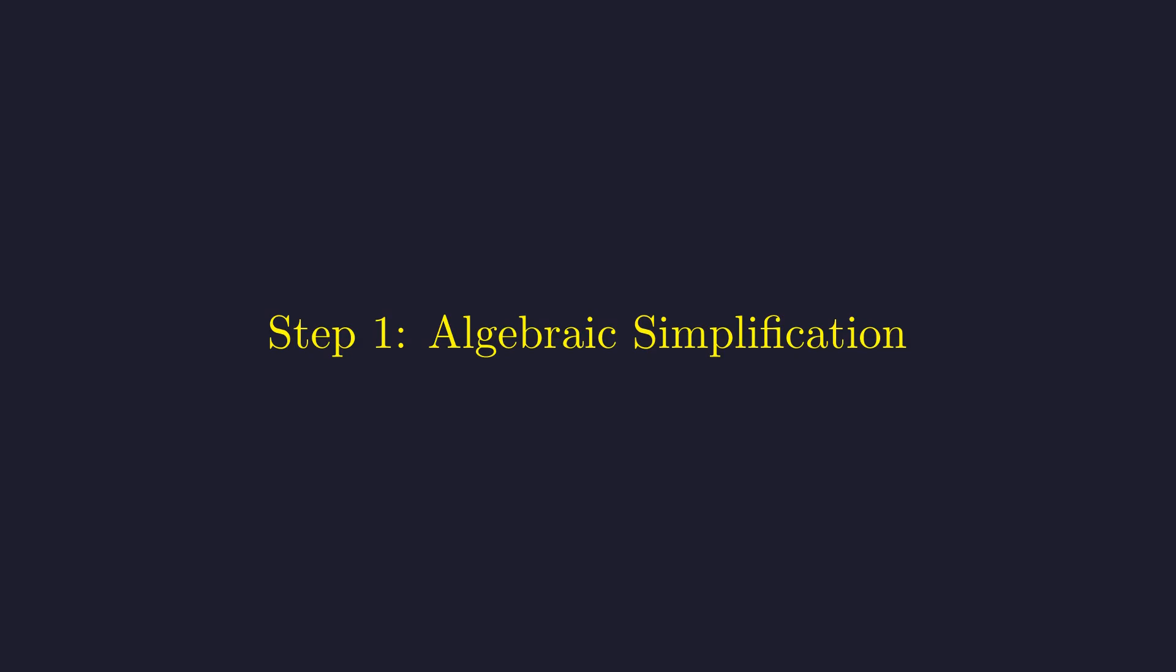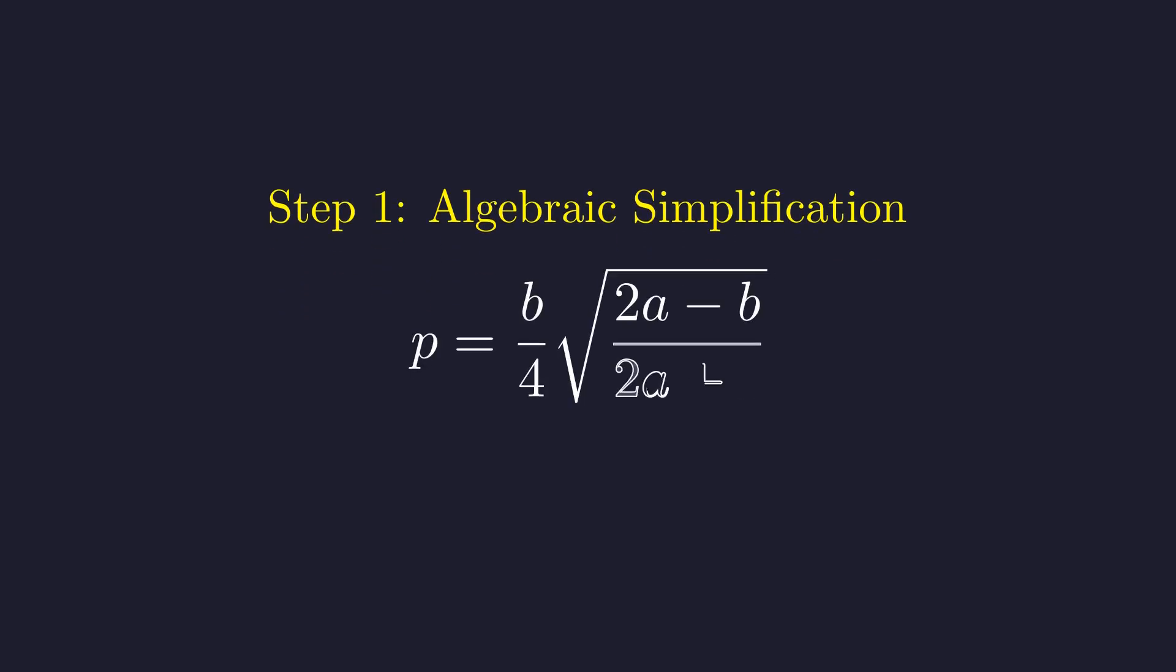Our first move is to wrestle this equation into something more manageable. That square root is what's making things messy, so let's see if we can get rid of it entirely. Starting with our equation here, for this square root to make sense, we need 2a minus b to be non-negative, which means b can't be bigger than 2a.